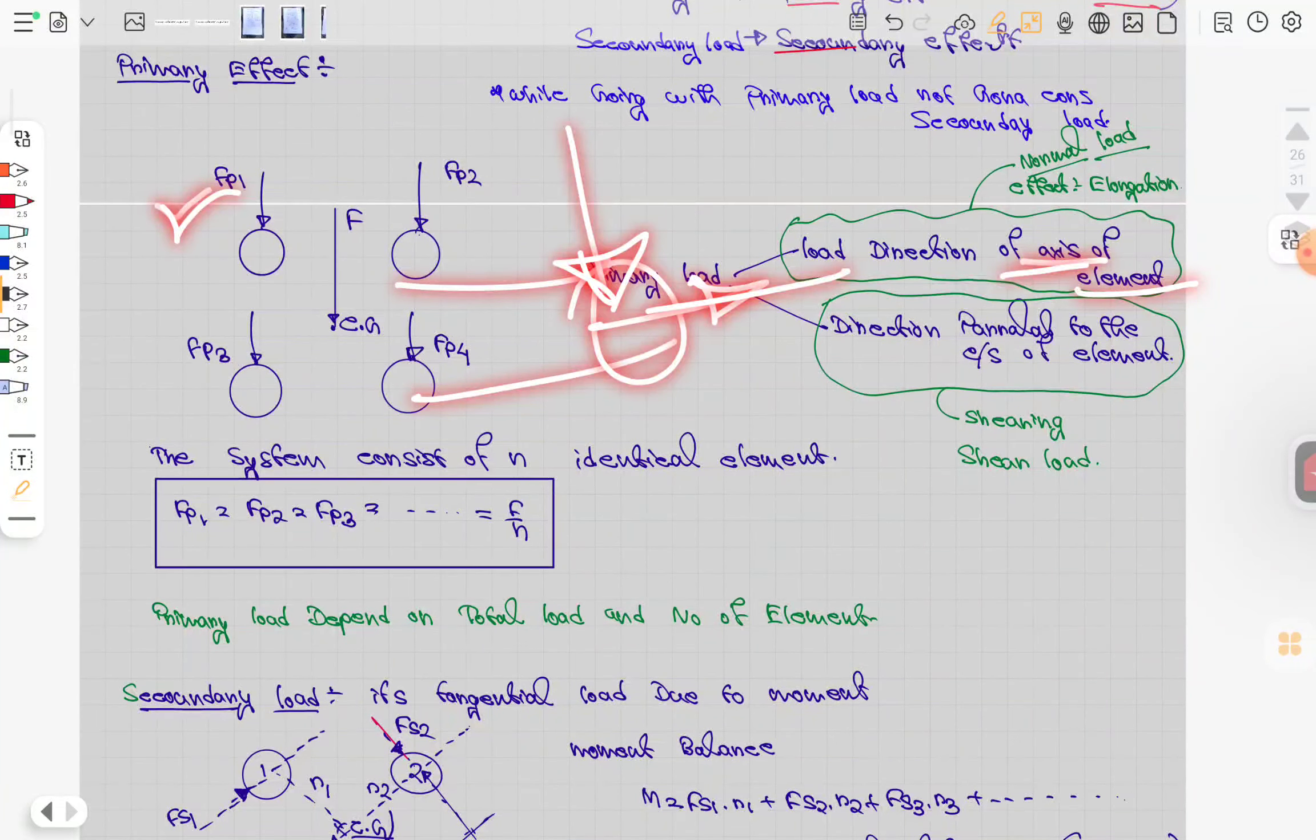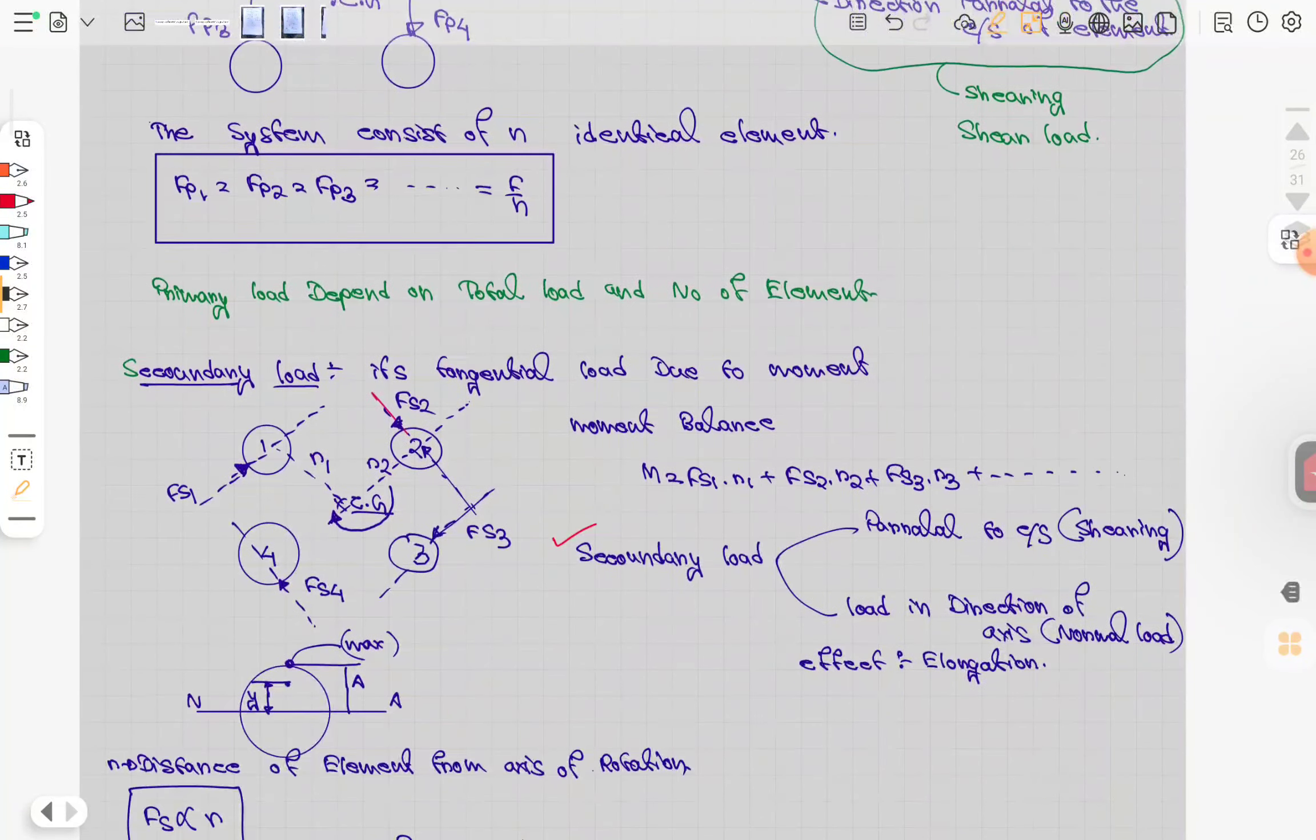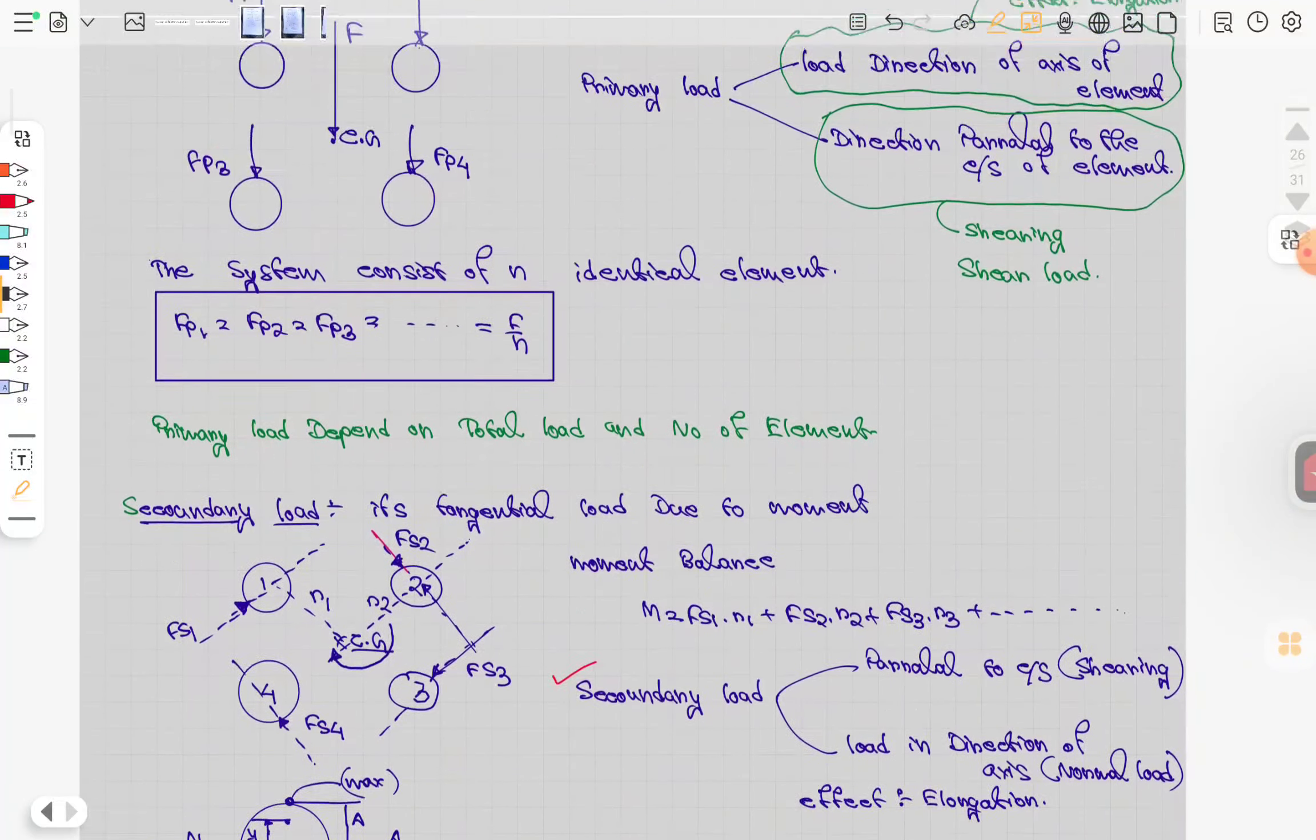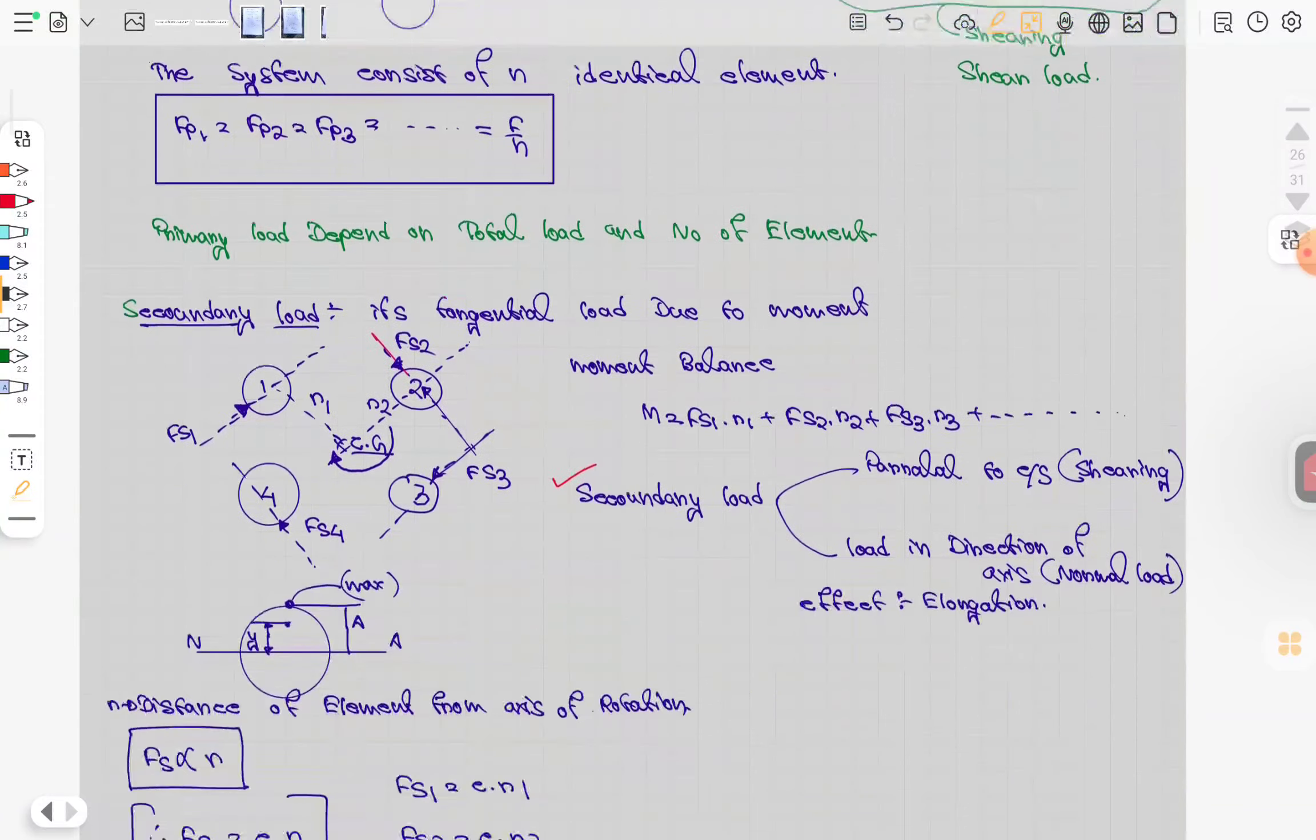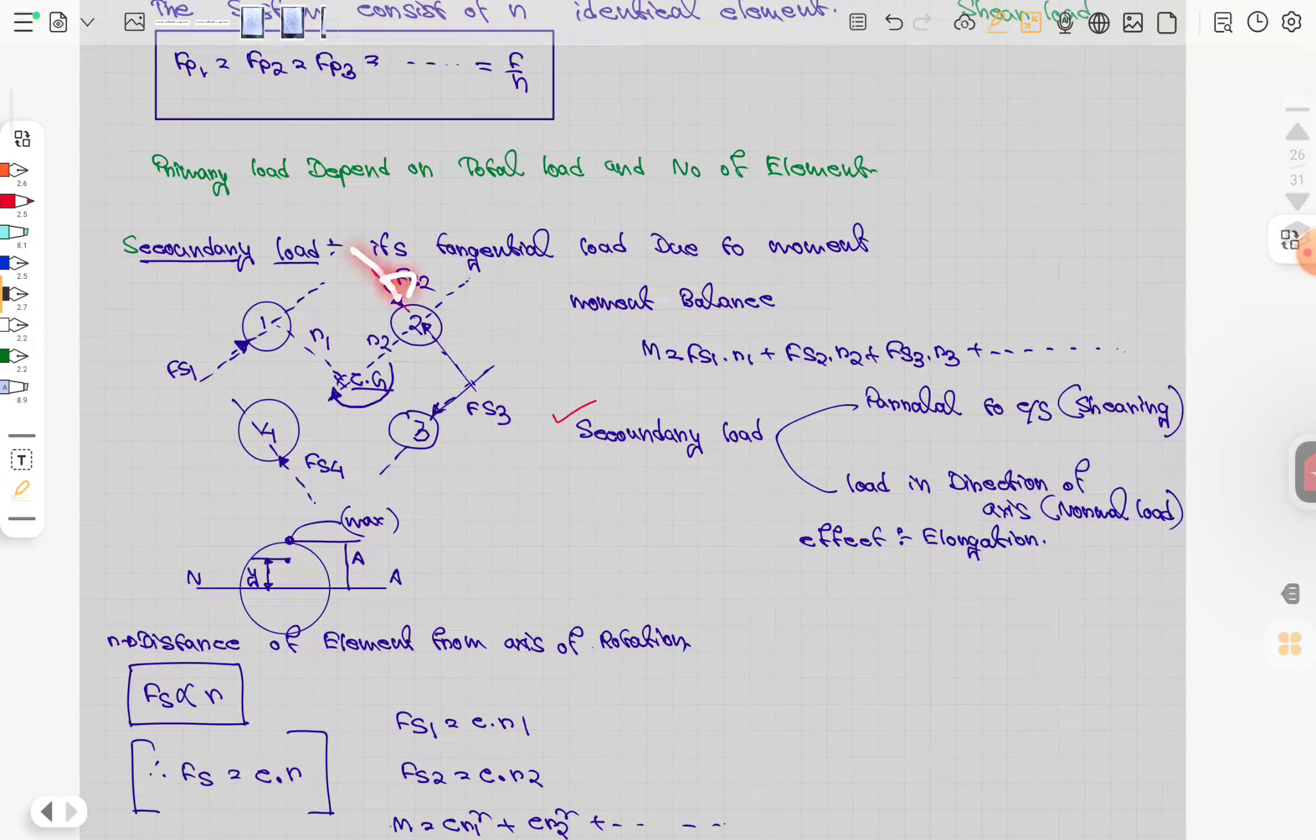The system consists of identical elements one, two, three, four with forces F1, F2, F3, F4. If the primary load is A, then each element experiences A/n.